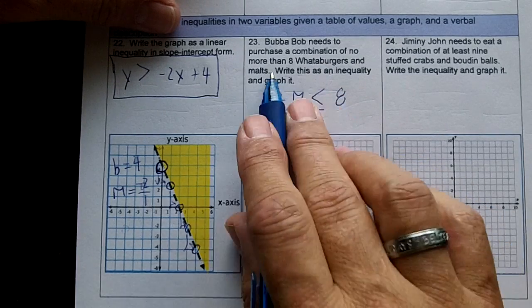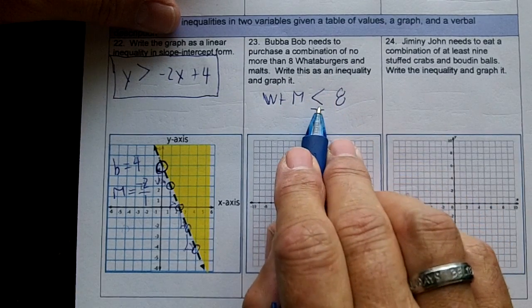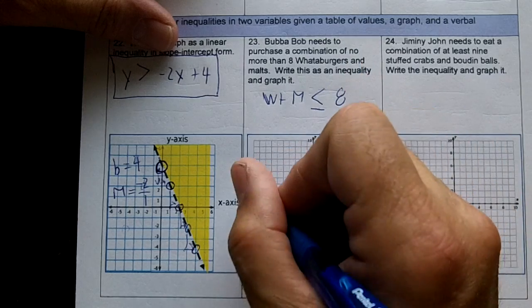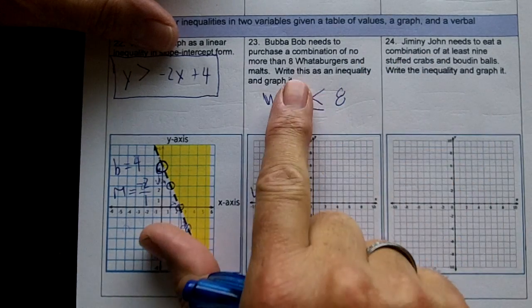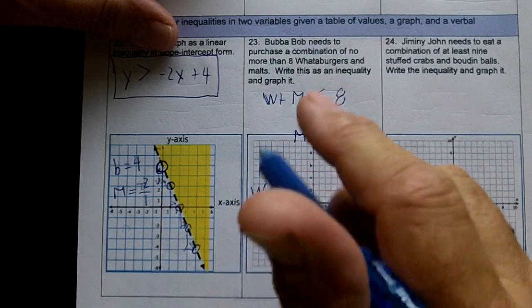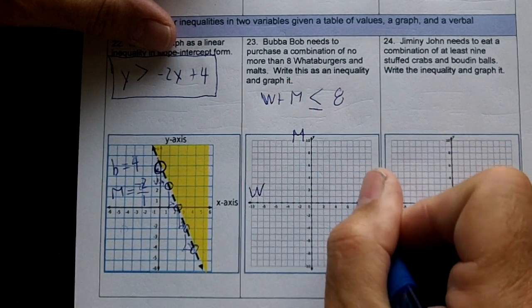Eight is no more than eight. So we're going to have less than or equals. So we have a waterburger axis and a malt axis. If I make my malts zero, I need to get eight waterburgers. So I'm going to go to the axis and put a dot at eight.